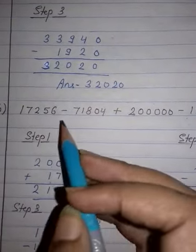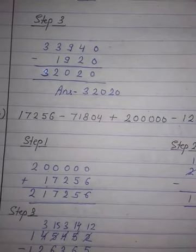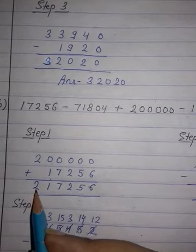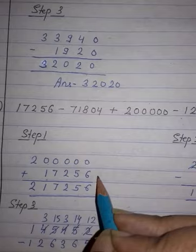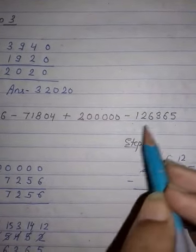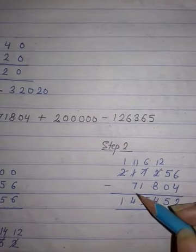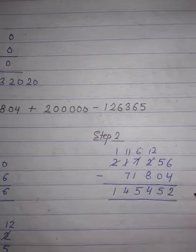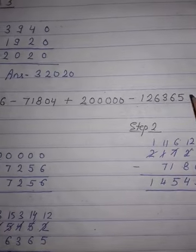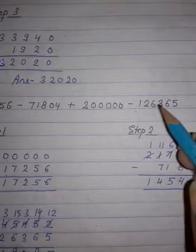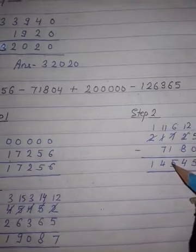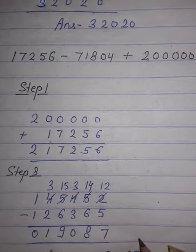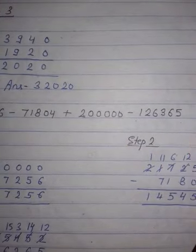Come to question number 6B. Numbers are given; you have to solve it. First step will be addition, so we will add 2,00,000 and 17,256. The answer is 2,17,256. This is the answer of step 1. Now subtract numbers step wise. In step 2, I have subtracted 71,804. Answer is 1,45,452. Now from the answer of step 2, I will subtract the second subtraction number given here, that is 1,26,365. You will get the final answer of your question, that is 19,087. This is the answer of your given question.